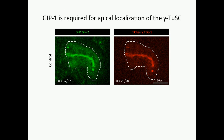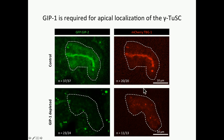What we were more interested in was understanding the role of GIP1 at these apical membrane MTOCs. Our first question was: is GIP1 required to recruit the other gamma-TuSC components? Under normal circumstances, GIP2 and gamma-tubulin localize with GIP1 to the apical membrane in a polarized intestine, but upon GIP1 depletion, we see a complete loss of that apical localization for both proteins. This suggests not only is GIP1 required to recruit the remaining gamma-TuSC components, but it also demonstrates that any residual GIP1 left behind after our degradation is insufficient to localize this nucleating machinery to the apical membranes.